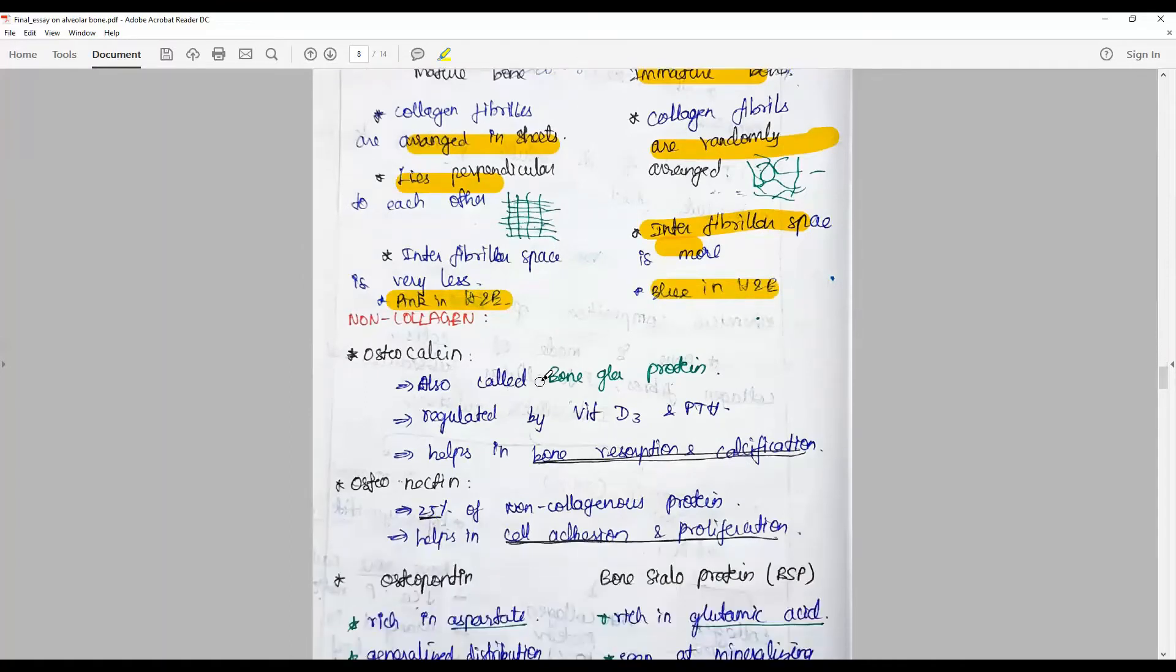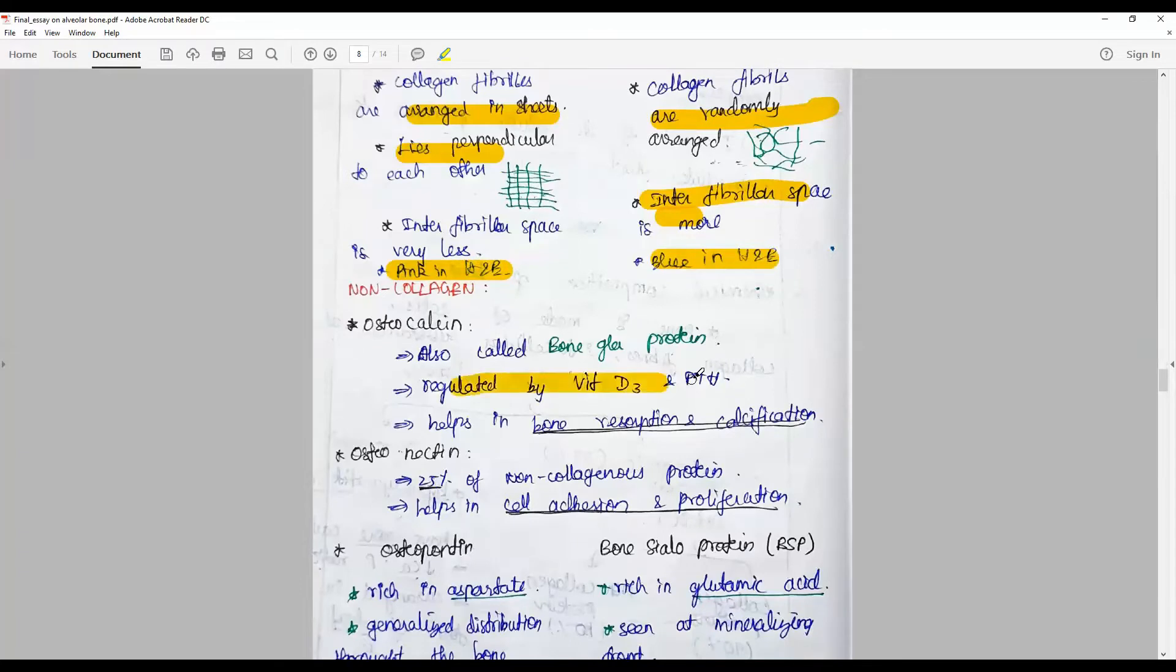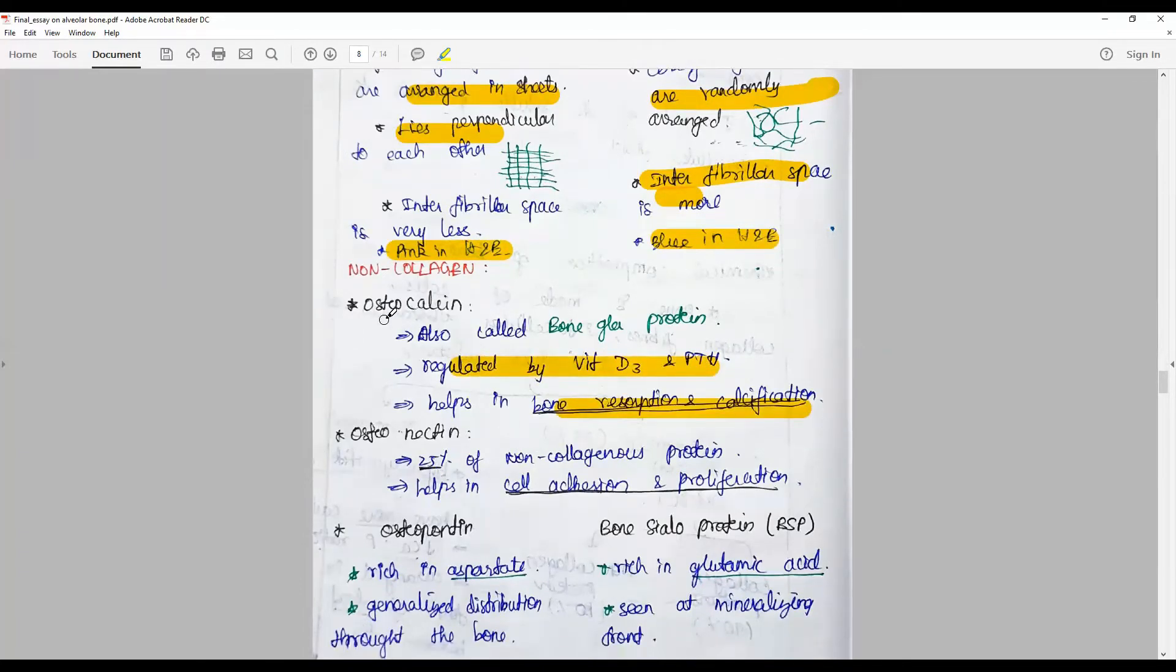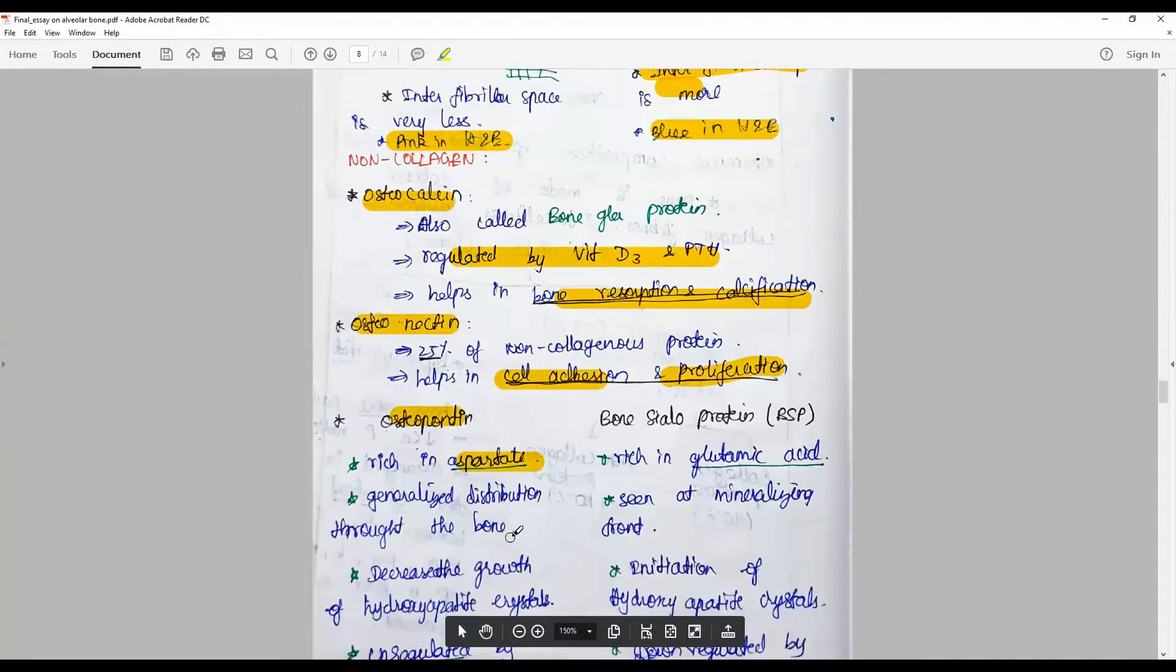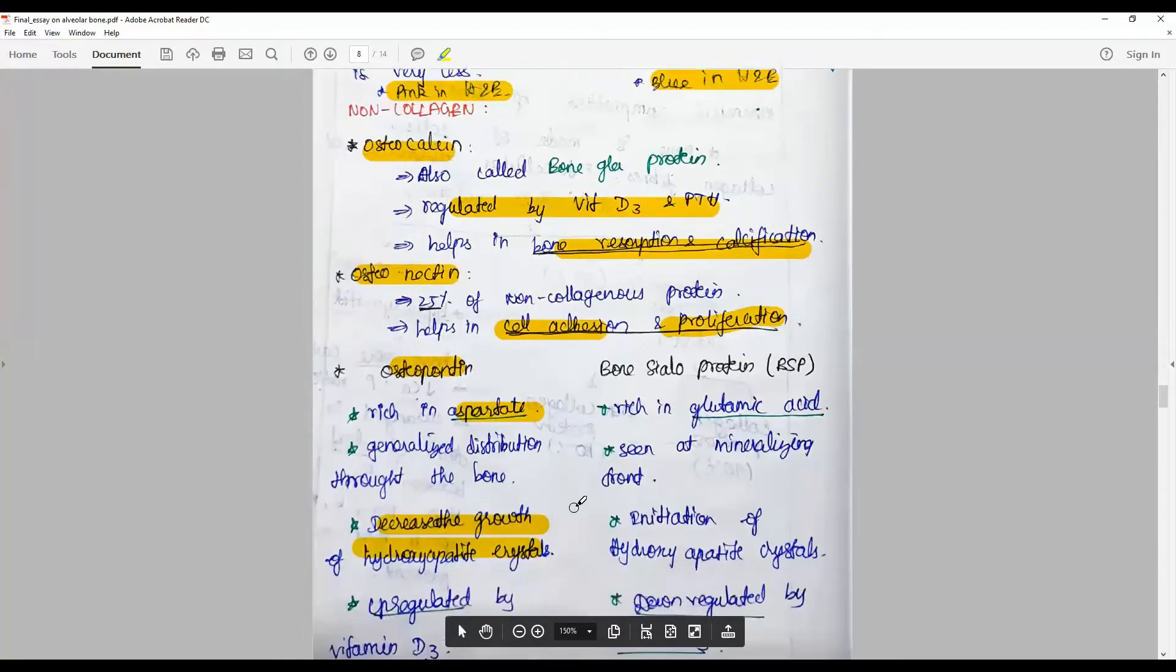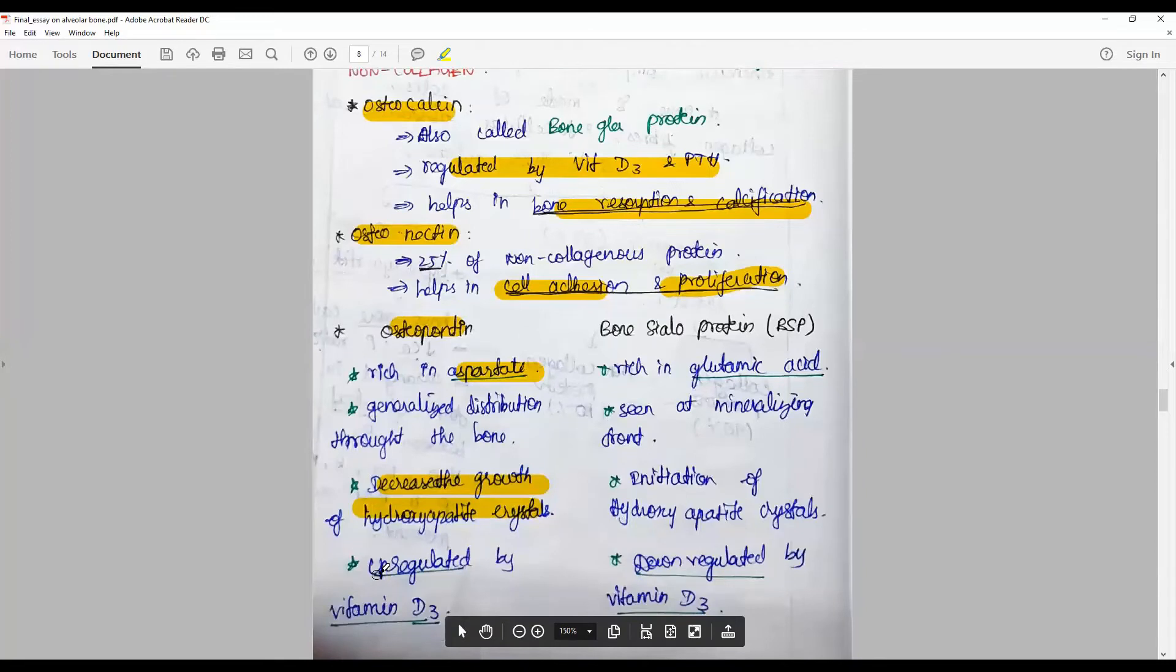The non-collagenous proteins of the bones are osteocalcin, and they are responsible for vitamin regulation, bone resorption, calcification. Some of the names are osteocalcin, osteonectin, osteopontin. They are concerned with cell adhesion and proliferation. Osteopontin is rich in aspartate and decreases or controls the growth of hydroxyapatite crystals and regulates vitamin D3.